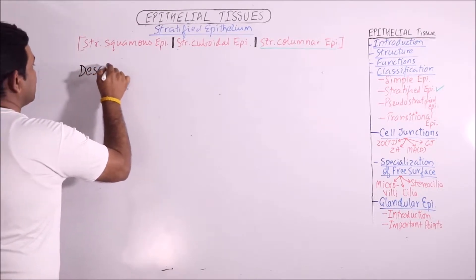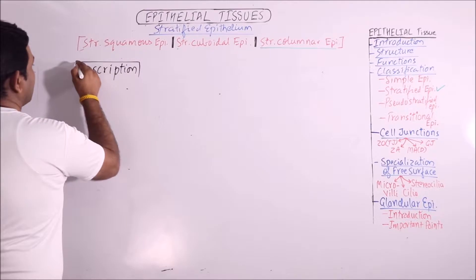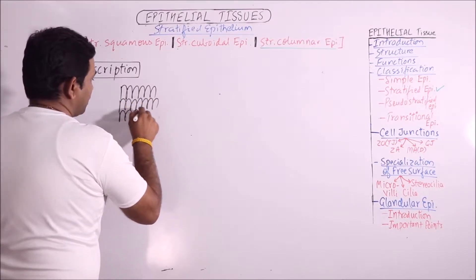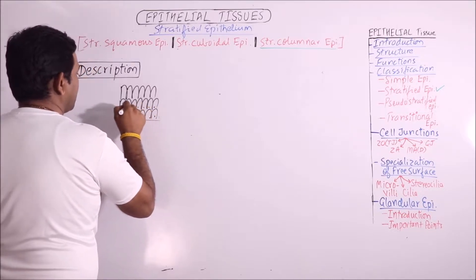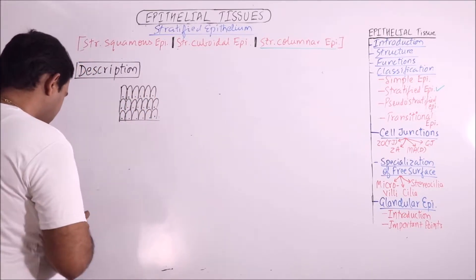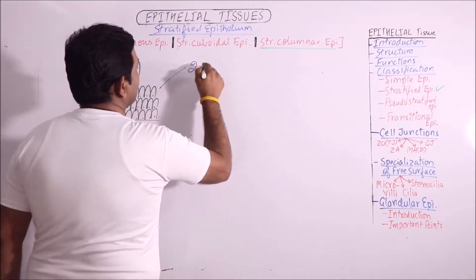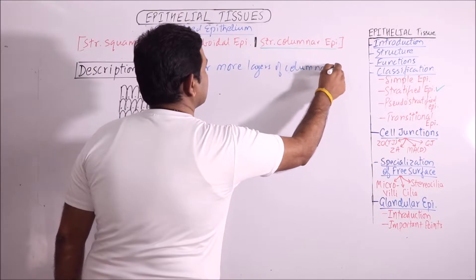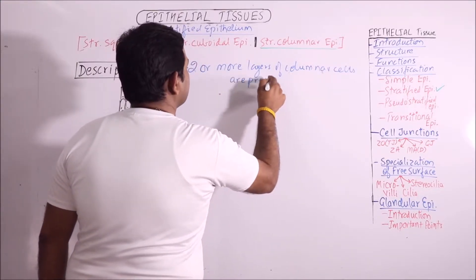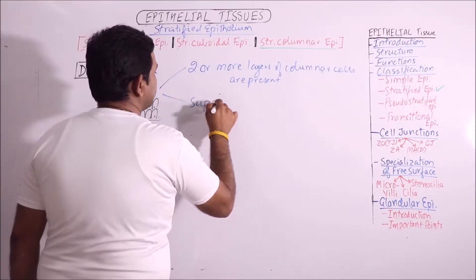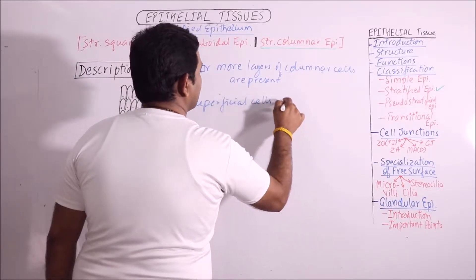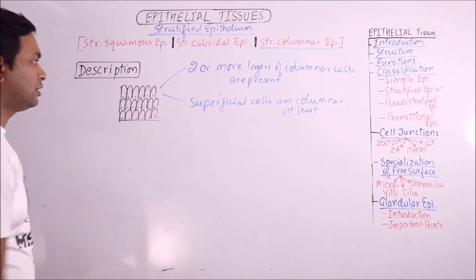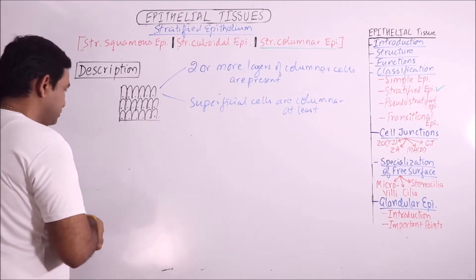First of all, the description. In this type of epithelium, two or more layers of columnar cells are present. The superficial cells are columnar, at least, because basal cells may have some altered shapes, but the superficial cells are columnar.